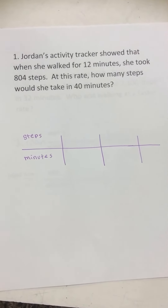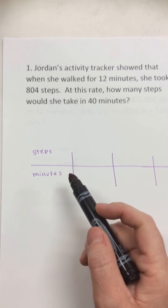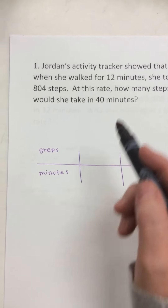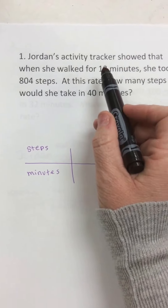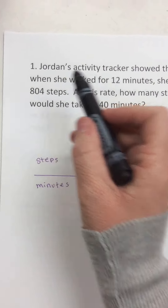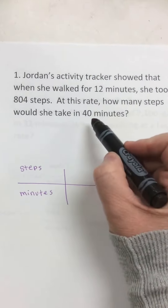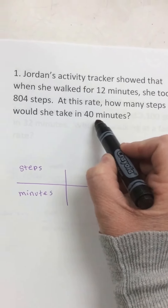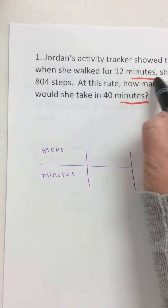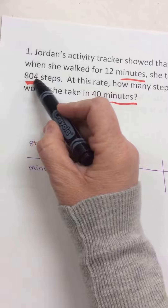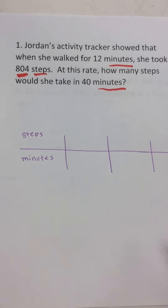Now this problem is pretty interesting. What I'm looking at is where the numbers are. I have 40, 12, and 804. I want to know what the numbers represent: 40 goes with minutes, 12 goes with minutes, and 804 goes with steps. So that's what I'm comparing — minutes and steps.